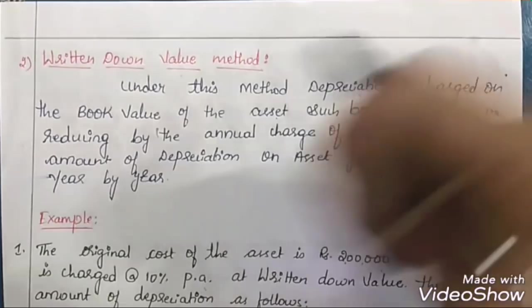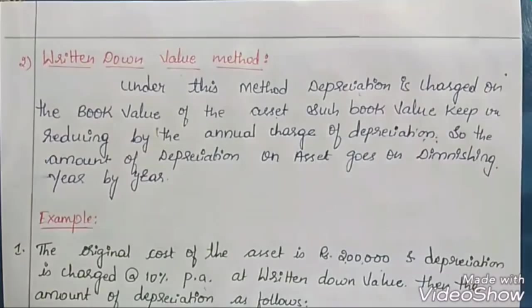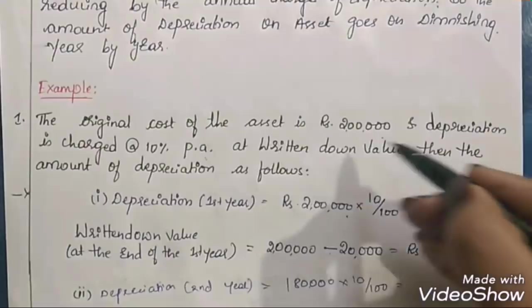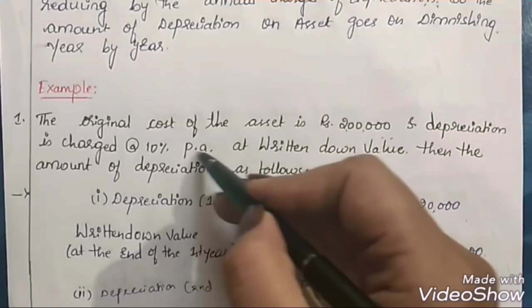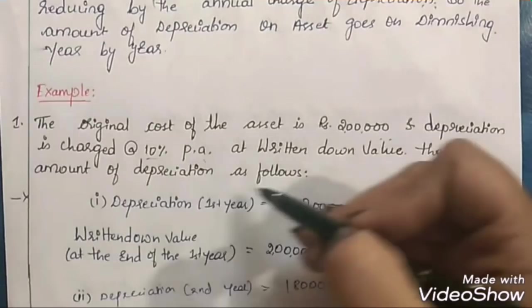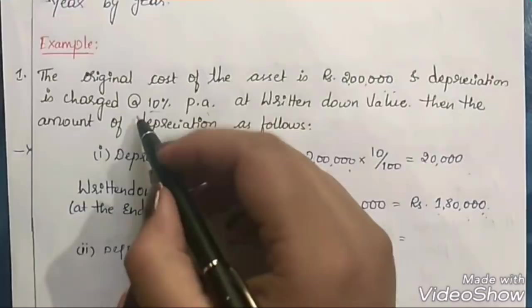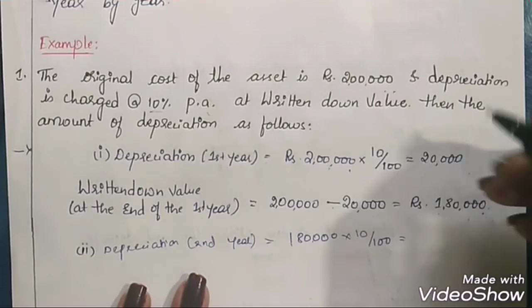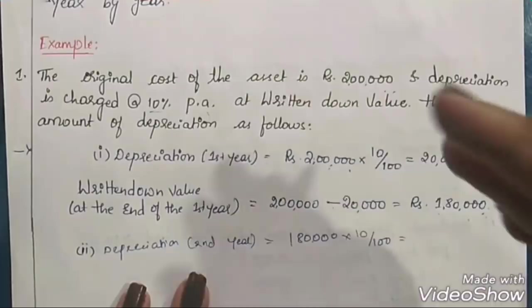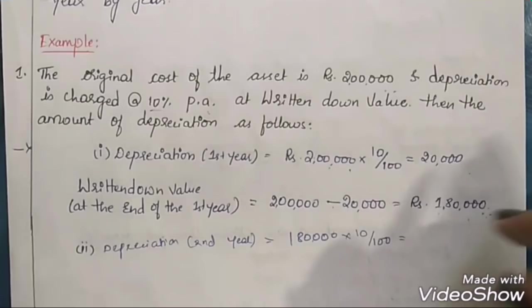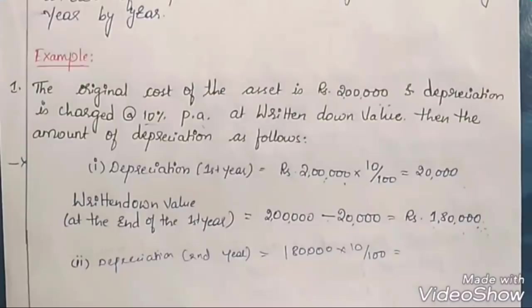Example: original cost of asset is Rs. 2 lakh, depreciation charged at 10% per annum under written down value method. For the first year: 10% of Rs. 2 lakh = Rs. 20,000 depreciation. Deducting Rs. 20,000 from Rs. 2 lakh gives a book value of Rs. 1 lakh 80,000 at the end of the first year.